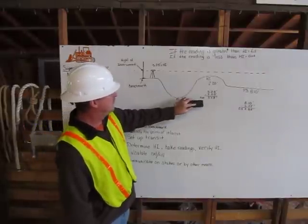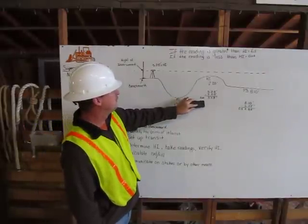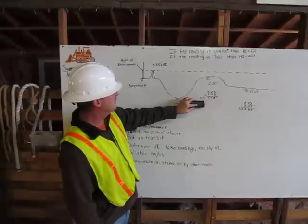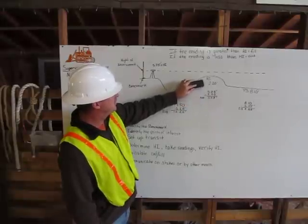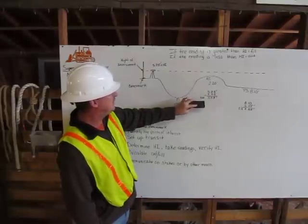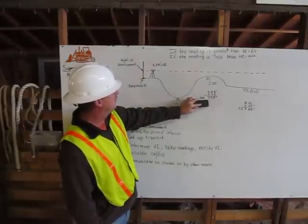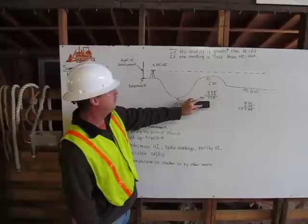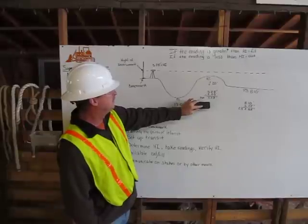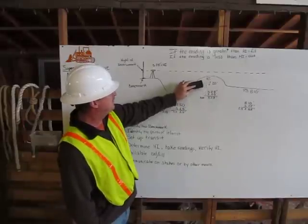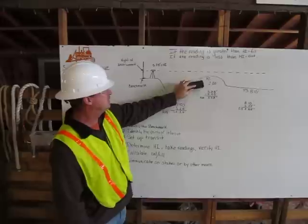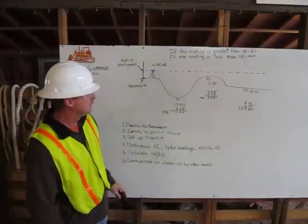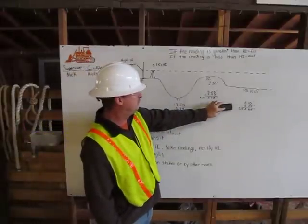And doing the math here, my reading is less than the height of instrument, so that means this location will be a cut, and it will be cut by 3.5 feet coming off this mound.